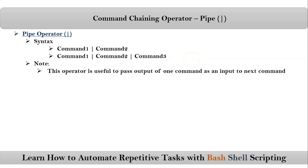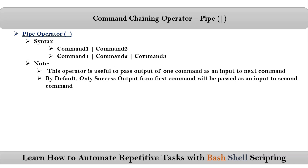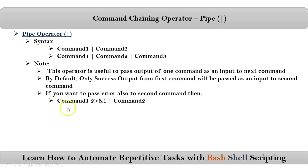Here you have to remember one very important point: by default, only the success output from the first command will be passed as an input to the second command. If you get an error from command one, that error is not passed to command two by default. But sometimes your required output will be in the error output of the first command. During that case, you have to redirect that error into standard output, so that the pipe will read it and pass it to command two as an input.